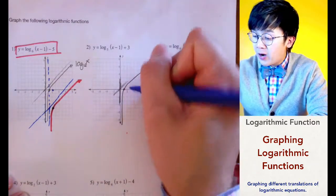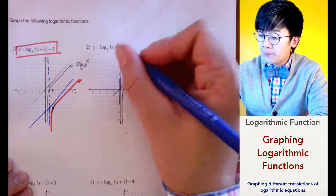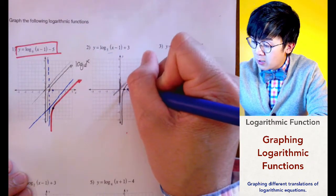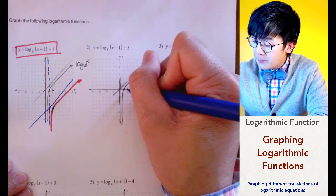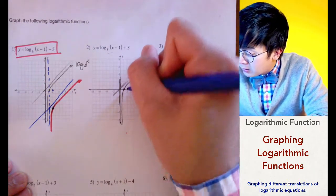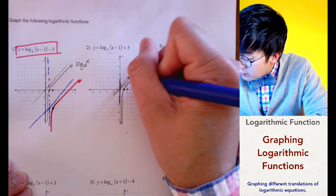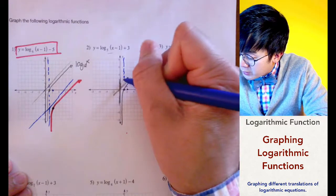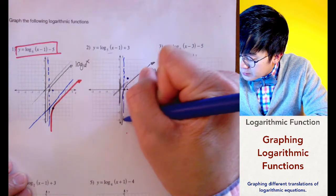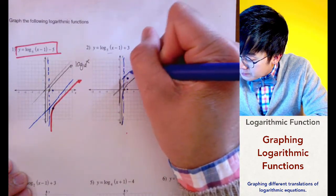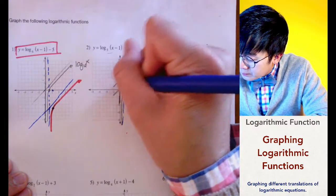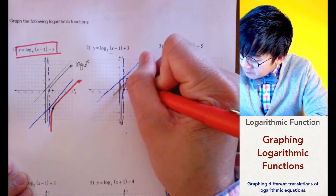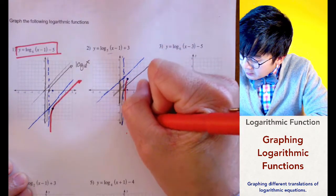Let's find the asymptotes of our translation. We have x minus 1, so from the point of inflection of the original function, we go 1 to the right and 3 going up — 1, 2, 3. This is now our new point of inflection. This is our vertical asymptote and the slant asymptote, and the function is graphed like so.